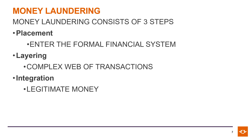Money laundering consists of three steps. The first step is placement — this is where the illegitimate funds enter the formal financial system. Step 2 is layering — a complex web of transactions to conceal the original source of the illegal funds. And then step 3 is integration, where these illegal funds appear to be legitimate money.